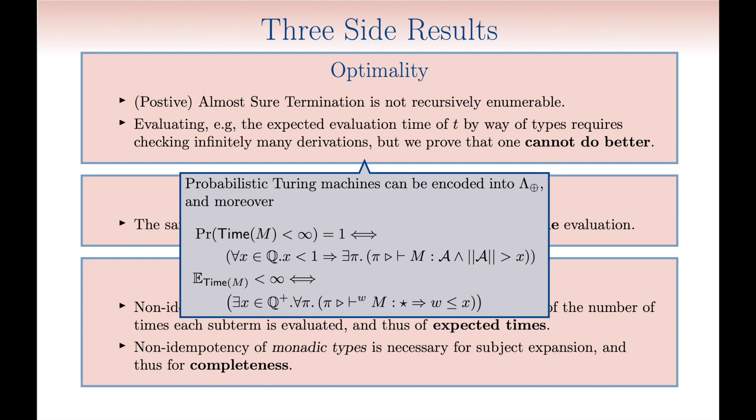That intersection types are optimal, then, can be seen from the fact that containment into sigma-02 and pi-02 can be proved through the type system, as outlined in the slide.